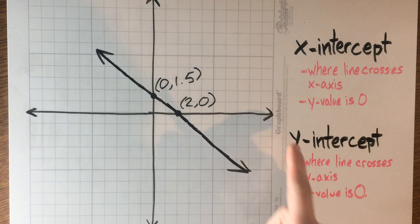So it's flip-flopped. Y-intercept, x-value is 0. X-intercept, y-value is 0.